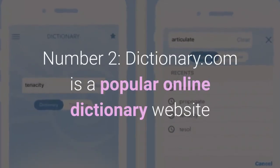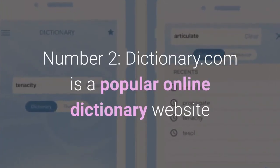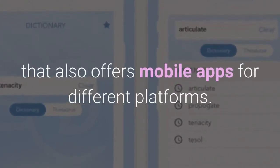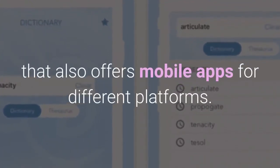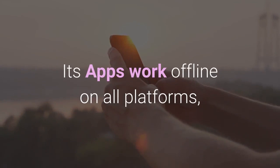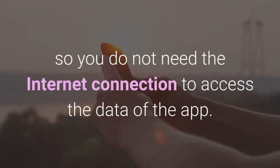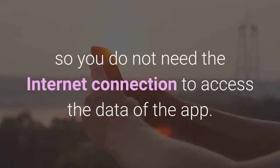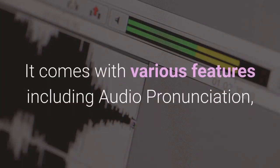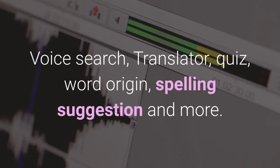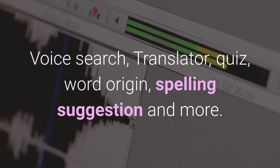Number 2: Dictionary.com is a popular online dictionary website that also offers mobile apps for different platforms. Its apps work offline on all platforms, so you do not need an internet connection to access the data of the app. It comes with various features including audio pronunciation, voice search, translator, quiz, word origin, spelling suggestion, and more.